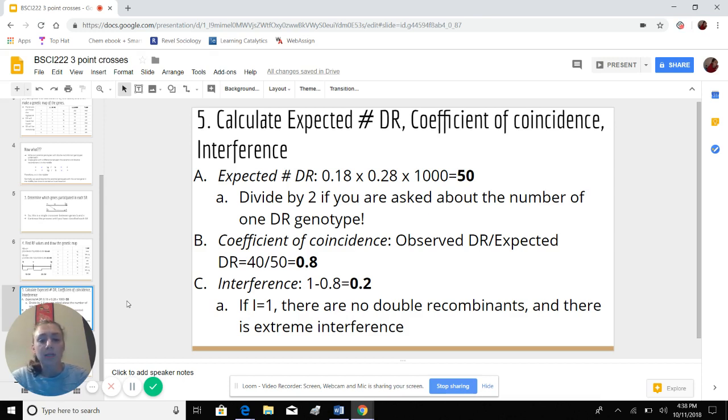And she will sometimes ask you for the number of one double recombinant genotype. So you have to divide this value by two. So remember that that was on one of my exams. So just look out for that.